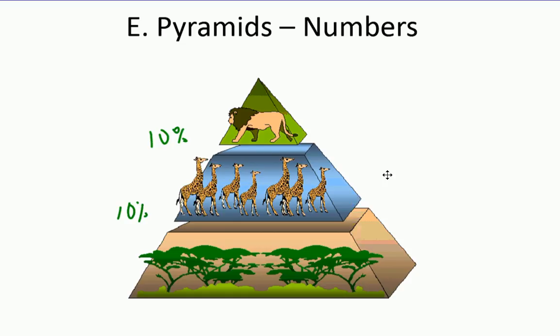We had three different pyramids: energy, which kind of encompasses all of it, then biomass, and then lastly this numbers pyramid.